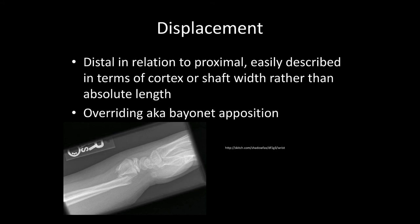Displacement is always described distal in relation to proximal. It's often better described in terms of cortical or shaft width rather than absolute length. Saying there is one-half shaft displacement posteriorly at the distal radial fracture is more informative than saying three millimeters. You can also talk about overriding or bayonet apposition. This radiograph shows a fracture of the distal radial metaphysis that is posteriorly or dorsally displaced — it's always the distal fragment moving relative to the more proximal fragment.